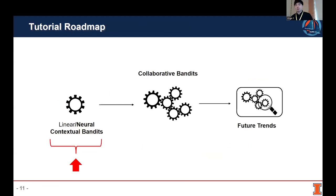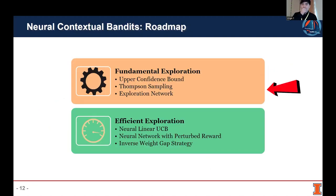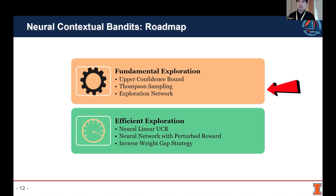This is the roadmap of this tutorial. In the following session, I will talk about linear and neural bandits, but we will focus on neural contextual bandits, which is a relatively new topic in recent years. There are mainly two parts in this session. The first one is the fundamental exploration, where we will discuss algorithms, theory, and empirical evaluations of classic exploration strategies. The second part will discuss efficient exploration designed for quick response and efficiency.